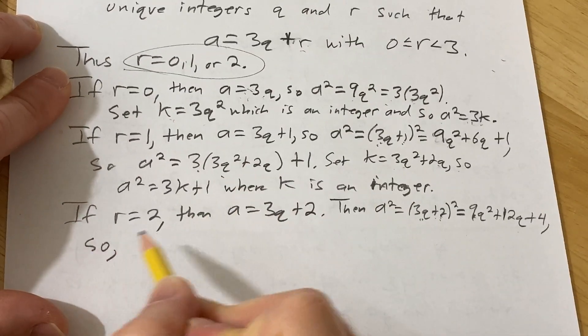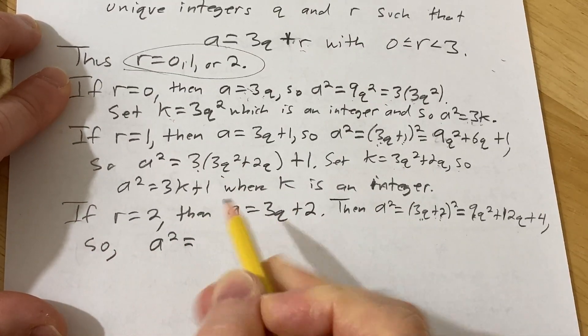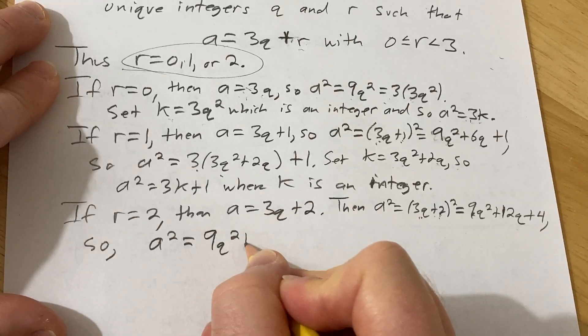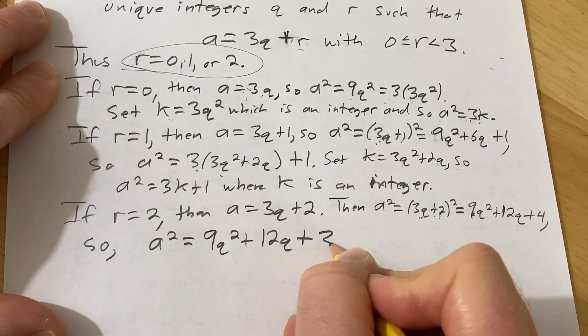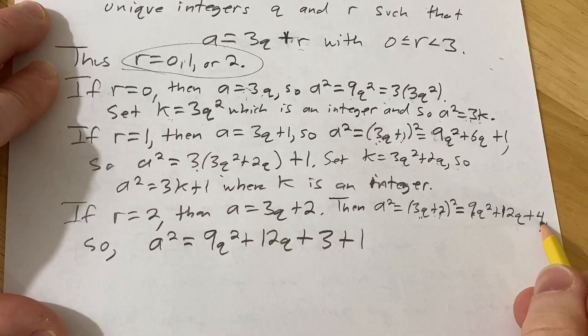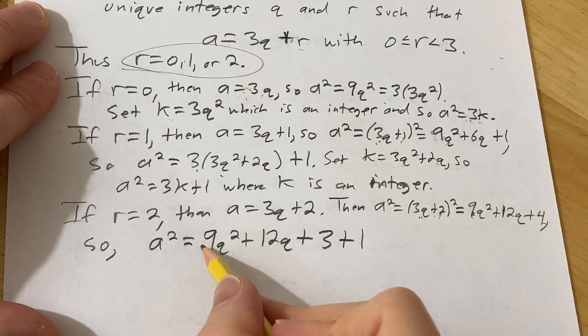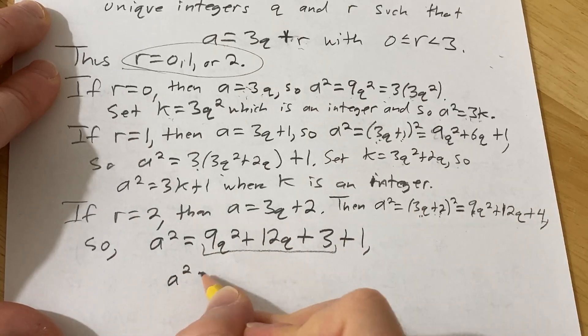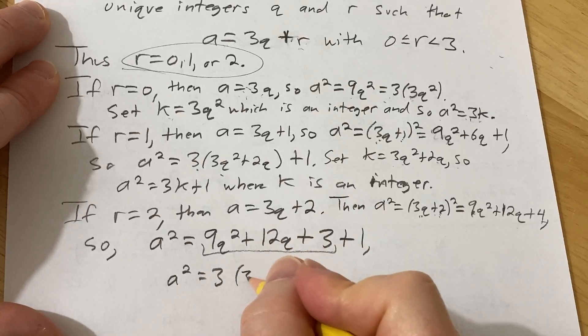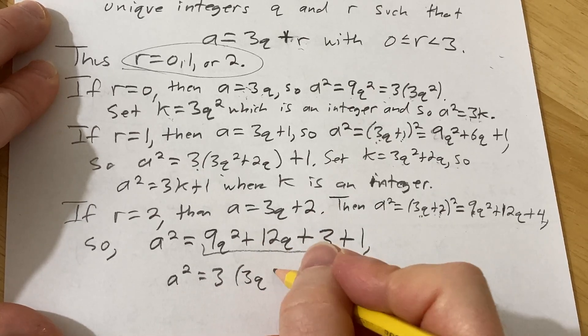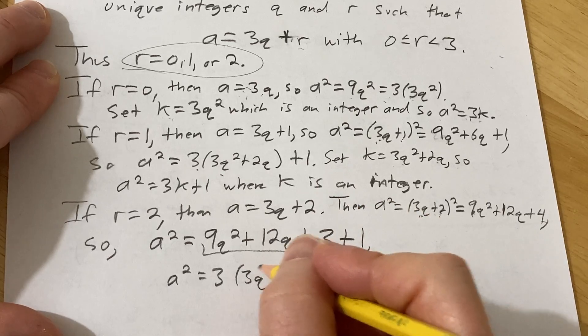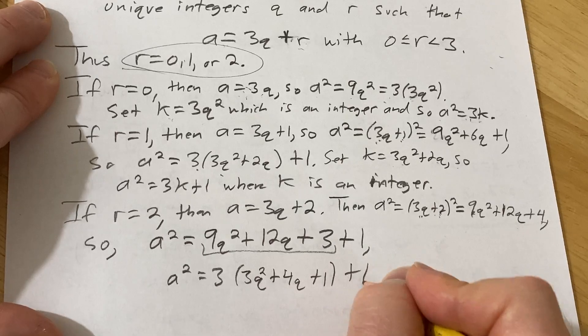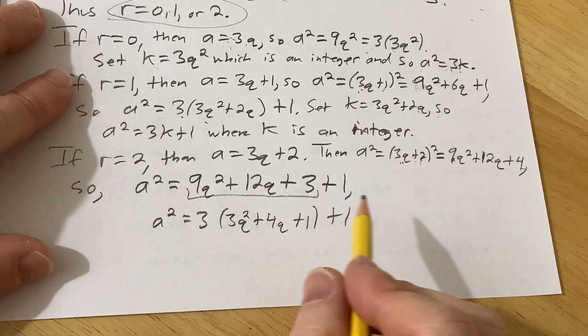So I'm going to write it again here. We have a squared equals 9q squared plus 12q plus 3 plus 1. I wrote it that way because I'm going to try to factor out a 3 now. So this is a squared equals 3 times 3q squared plus 4q plus 1 plus 1.